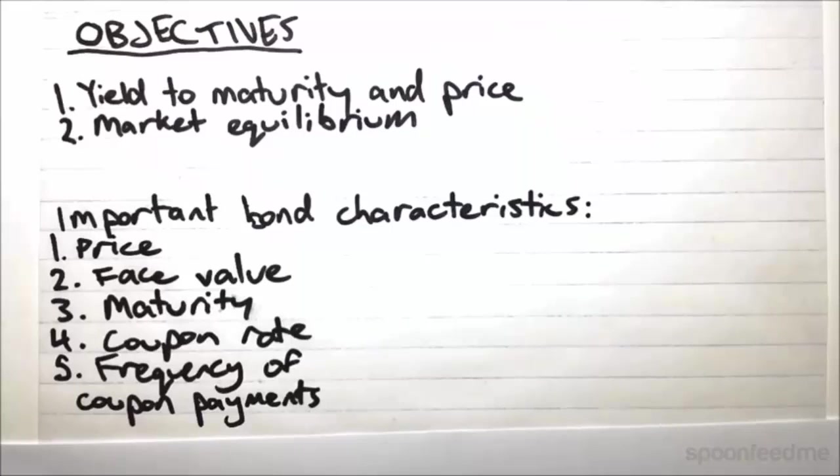The internal rate of return on a bond, under the assumption that you are holding it until maturity, is called the yield to maturity. And the yield to maturity we use to compare different bonds and say which one is more profitable. A higher yield to maturity means a more profitable bond.